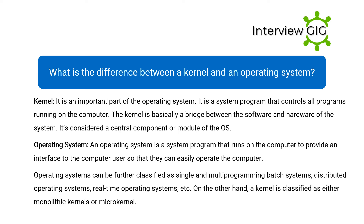What is the distinction between a kernel and an operating system? The kernel is an important part of the operating system. It is a system program that controls all programs running on the computer. The kernel is basically a bridge between the software and hardware of the system and is considered a central component or module of the OS.